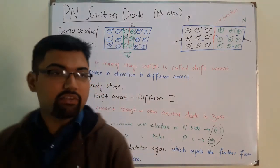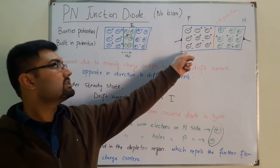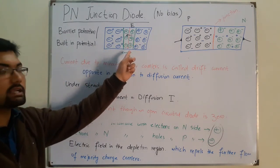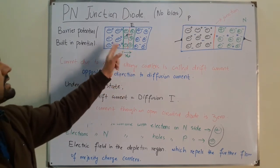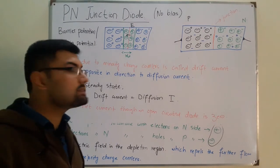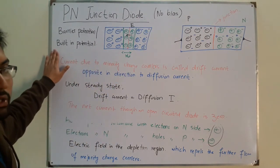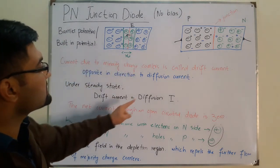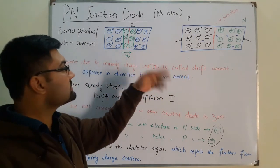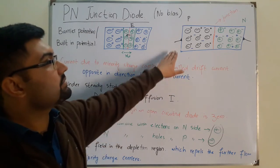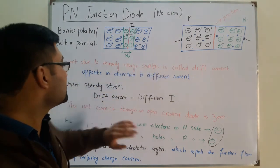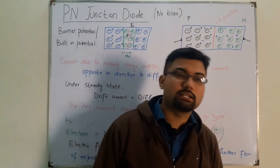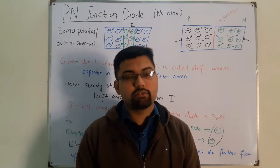That's all about this lecture on the PN Junction Diode. We doped one side with P type material and the other with N type. Electron-hole recombination takes place, uncovering immobile ions. Negative and positive ions in the depletion region establish an electric field that stops further flow of majority carriers. This barrier is called the barrier potential or built-in potential. Diffusion current is due to majority carriers; drift current is due to minority carriers and is in the opposite direction. Under steady state — open circuit, no external bias — drift current equals diffusion current, so the net current is zero. See you in the next lecture on the forward bias condition.